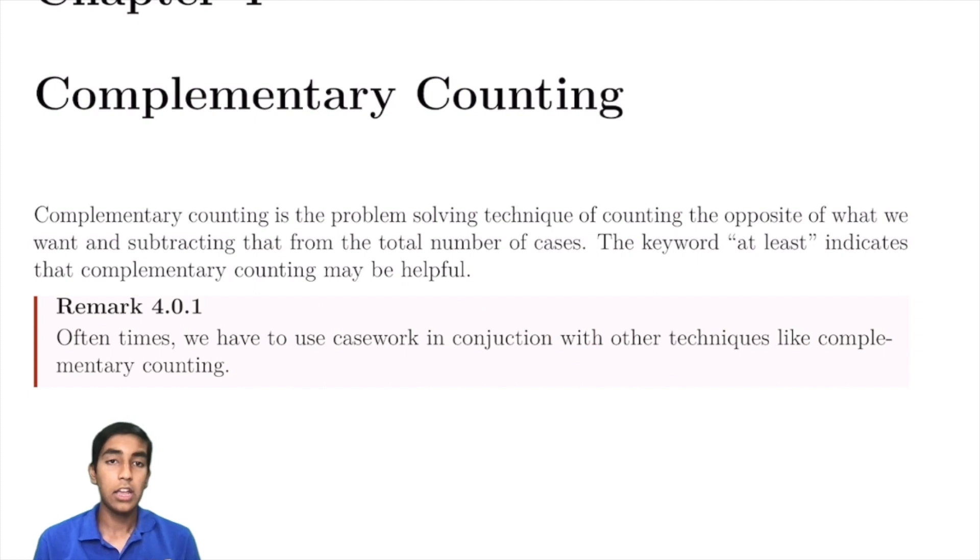So complementary counting is just looking at what you don't want to find and subtracting it from the total number of cases. And sometimes, not always, but sometimes at least can indicate that complementary counting can be helpful.